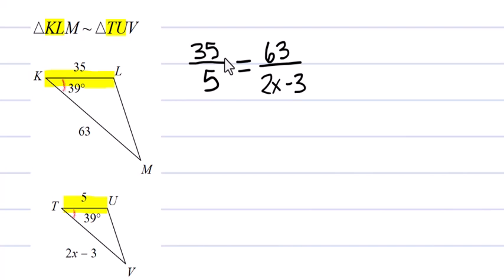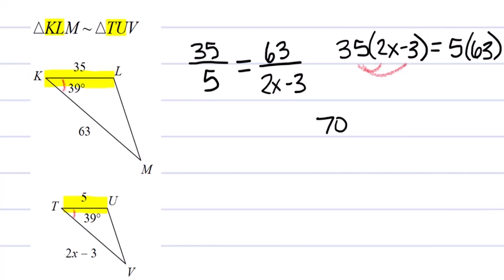Let's cross multiply. I'm going to take 35 times 2X minus 3 and set that equal to 5 times 63. From here, we do need to do some distributive property. So we're going to get 35 times 2 is 70. This is going to be 70X minus 105.